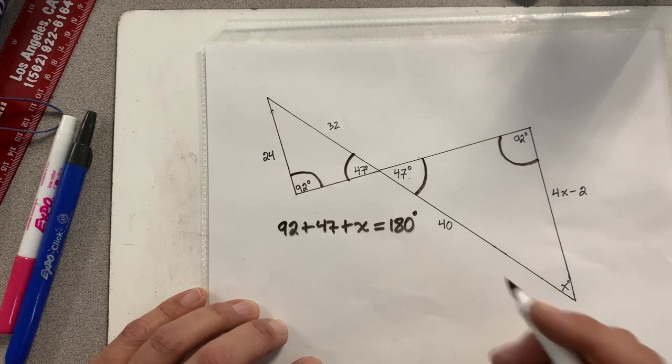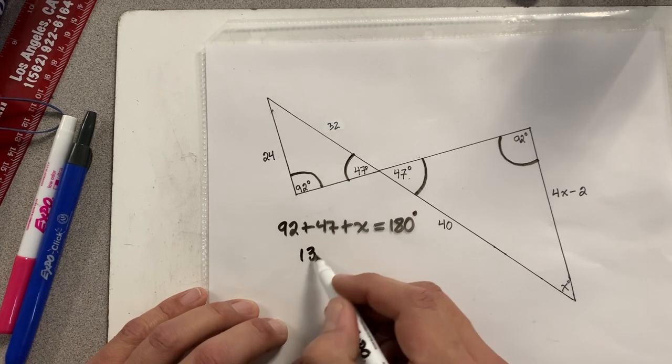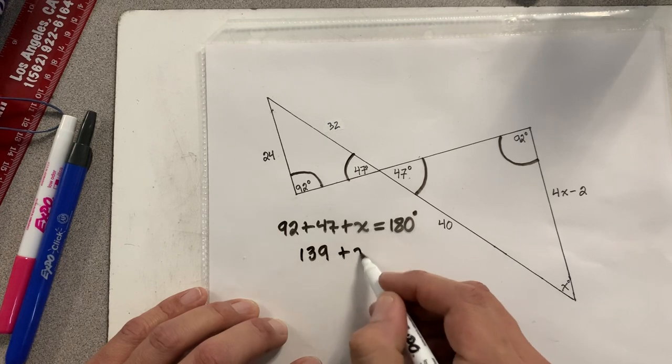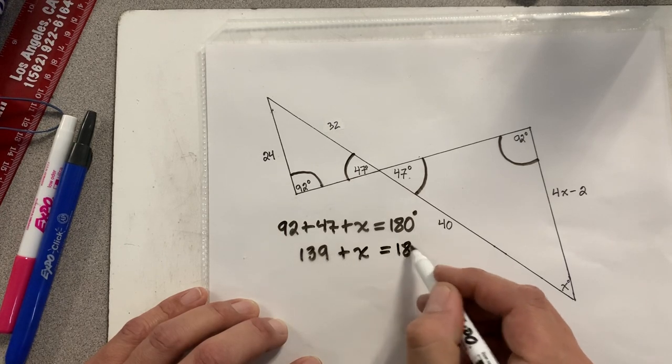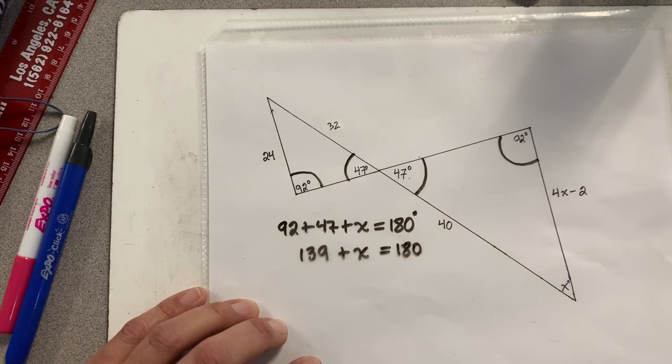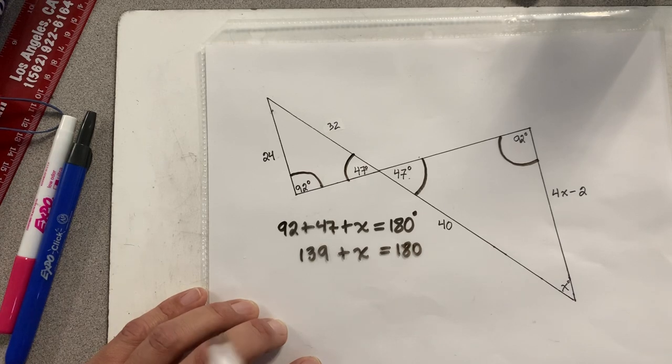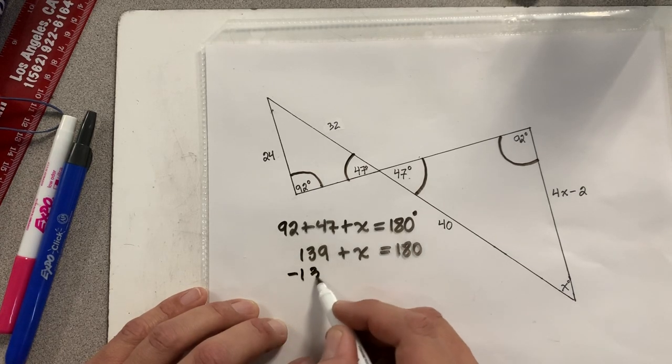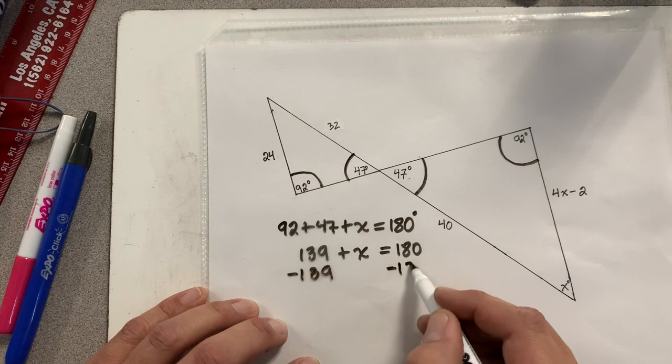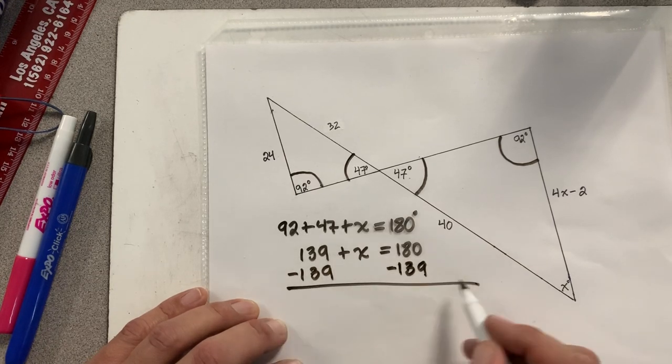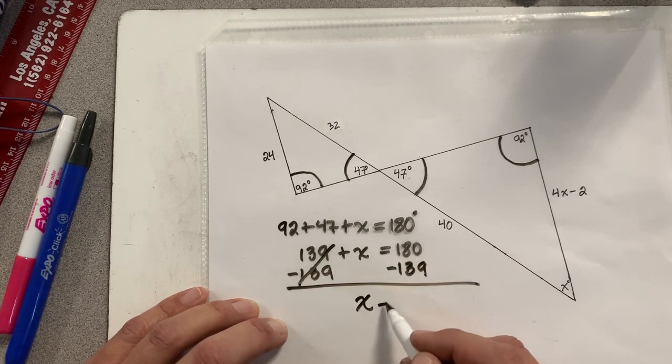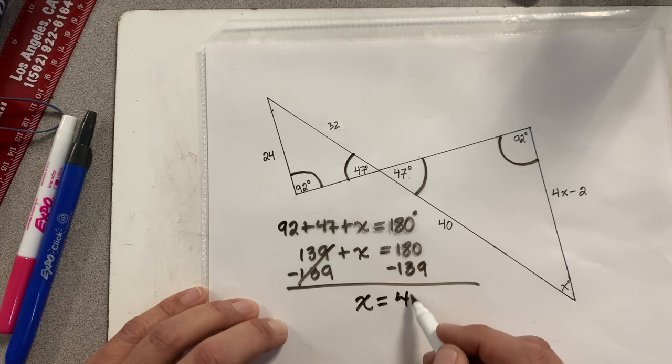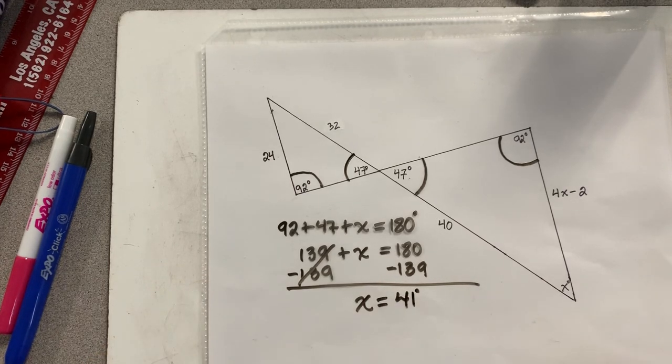92 plus 47 is 139 plus X equals 180 degrees. I subtract 139 from both sides. And now I get X equals 41 degrees. So that's the value of X.